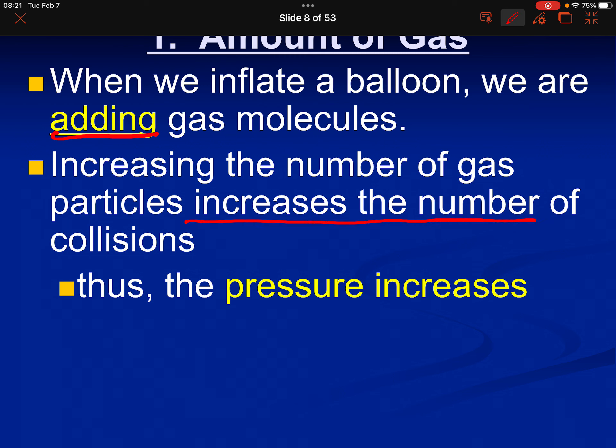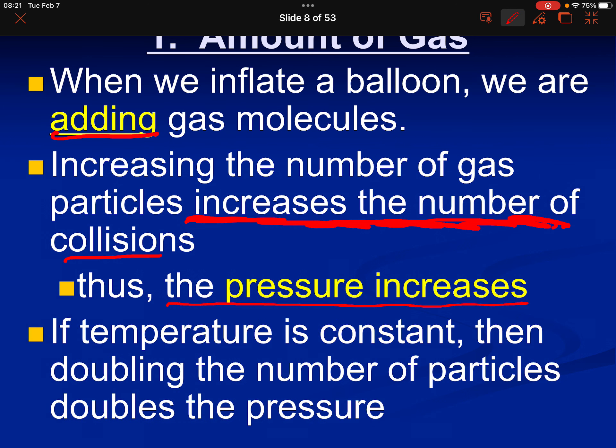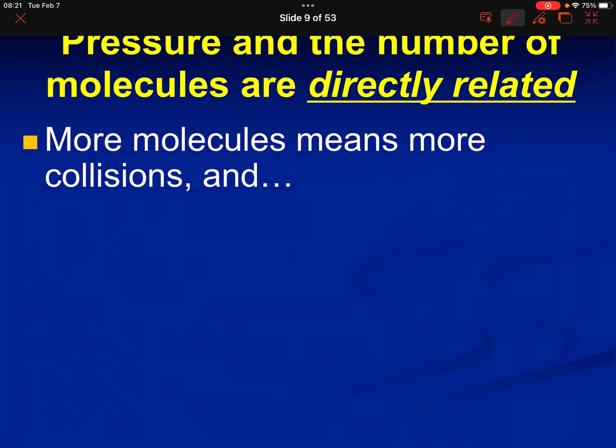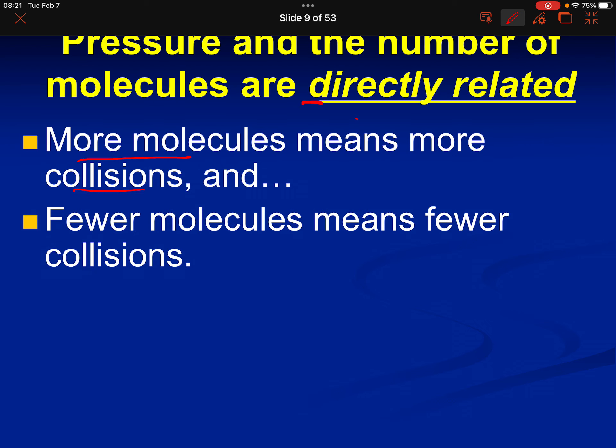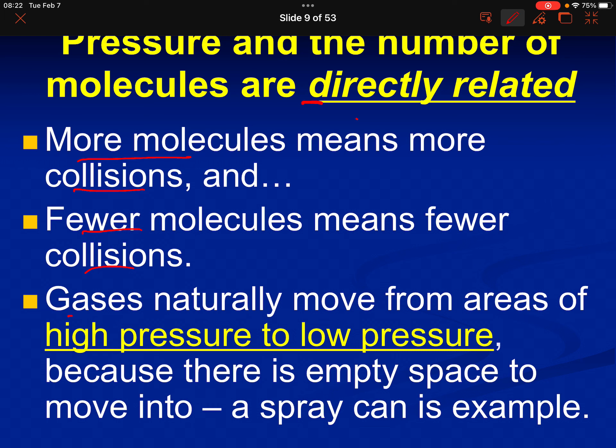So all of these three things, volume, temperature, and moles, affect the pressure. When we inflate a balloon, we're adding gas molecules. If we increase the number of particles, we increase the number of collisions, and thus the pressure increases. Because pressure is always related to the number and magnitude of collisions. If the temperature is held constant, if we double the number of gas particles, if we double the moles of gas, we will double the pressure. So that is a direct relationship between pressure and amount of gas. So pressure and the number of molecules are directly related. More molecules, more collisions. Fewer molecules, fewer collisions.